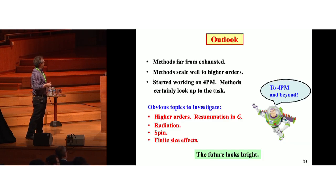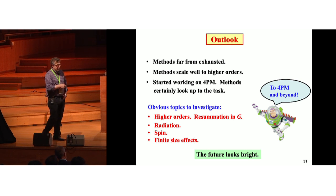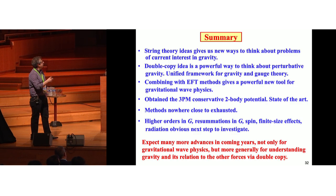What's the outlook? Well, methods are very far from exhausted. The methods were designed to scale very well to high orders. We've started working at 4PM. The methods certainly look up to the task. And of course, there's many other topics to investigate. We want to look at higher orders. And one of the things we want to keep an eye on is resummation in Newton's constant. There's problems of directly feeding gravitational radiation into this formalism. There's including spin, finite size effects. And there's, I'm sure, many, many more years of work to be done. But in any case, the future looks bright.